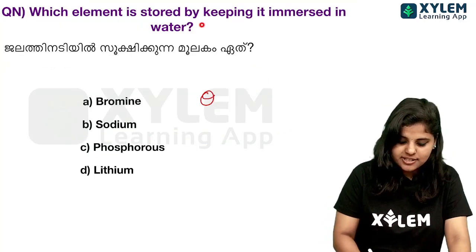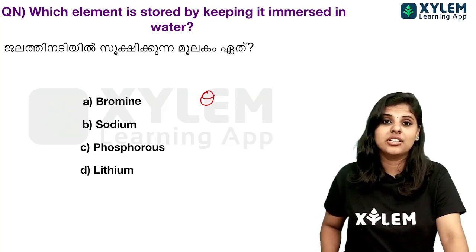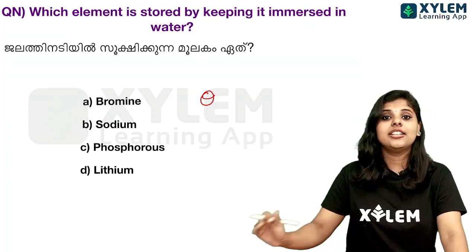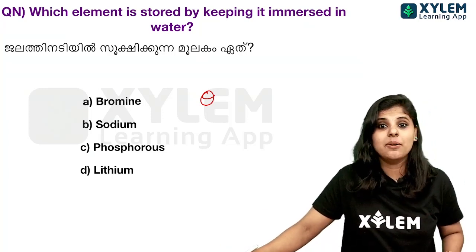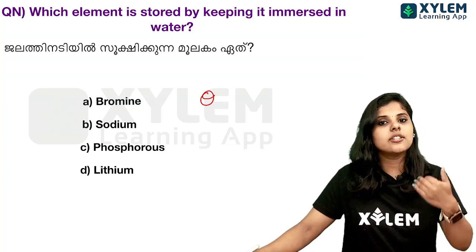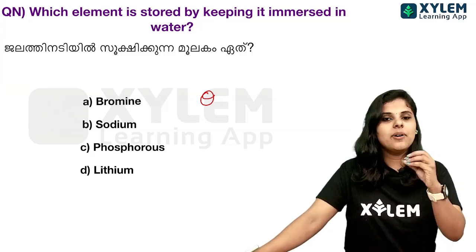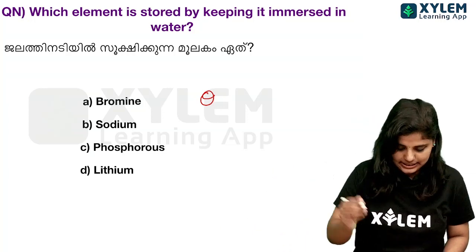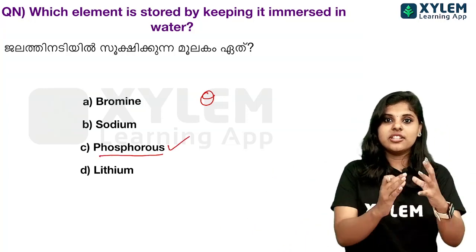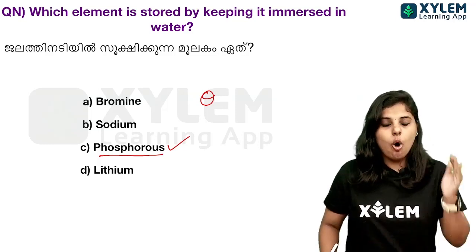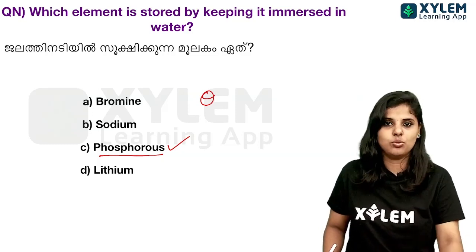Next question: Which element is stored by keeping it immersed in water? The answer is phosphorus. Phosphorus reacts with oxygen in the same way, so it must be kept immersed in water to prevent it from reacting with atmospheric oxygen.